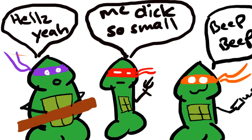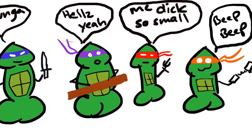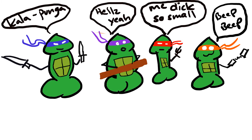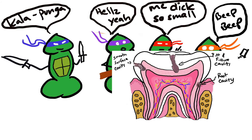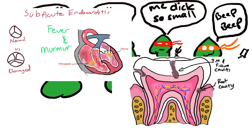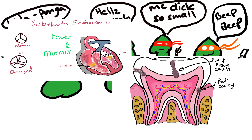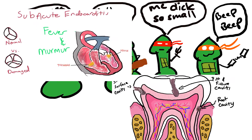Streptococcus mitis is part of our normal flora and lives on the hard surfaces of the mouth, like the teeth. It can also cause subacute endocarditis from invasive dental procedures, and that's essentially all you need to know about this organism.